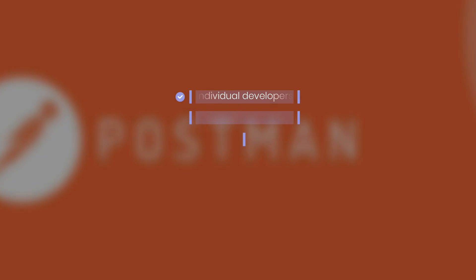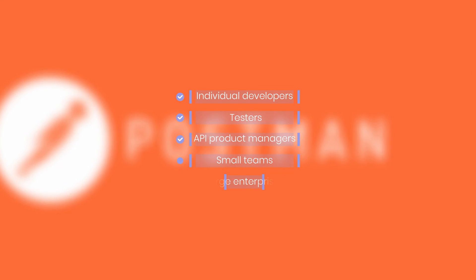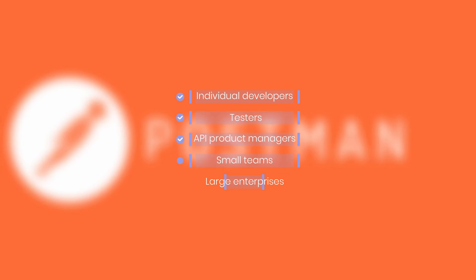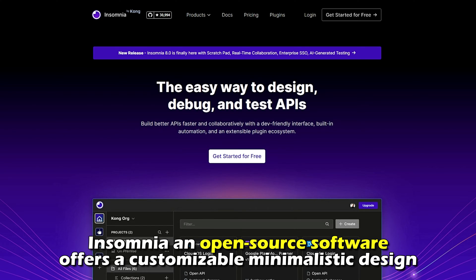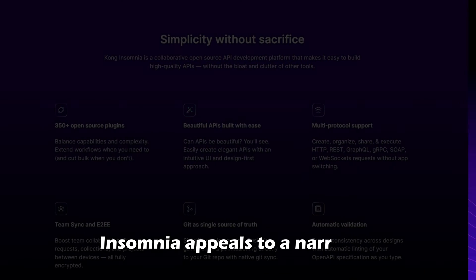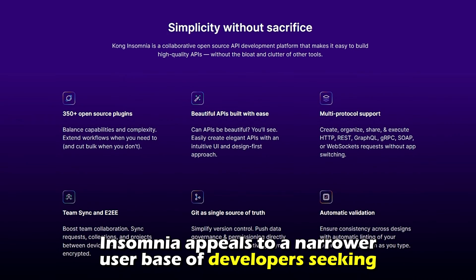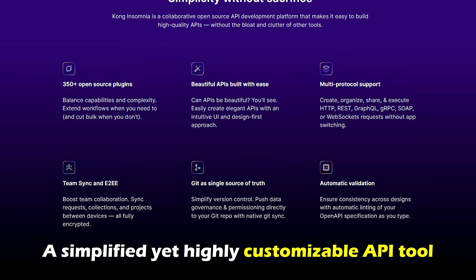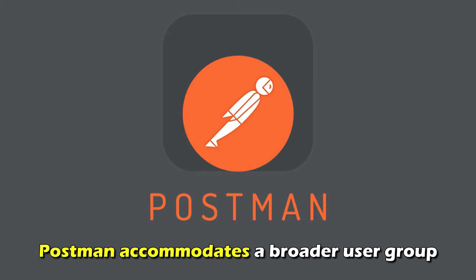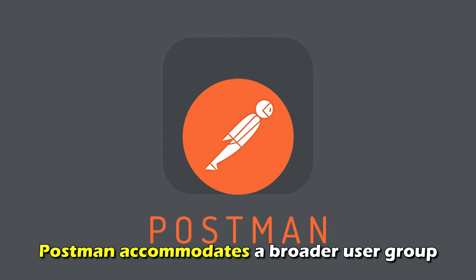Postman extensively caters to individual developers, testers, API product managers, small teams, and large enterprises. Conversely, Insomnia, an open-source software, offers a customizable, minimalistic design. Insomnia appeals to a narrower user base of developers seeking a simplified yet highly customizable API tool. Hence, Postman accommodates a broader user group.